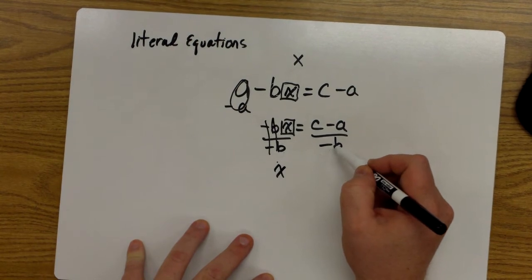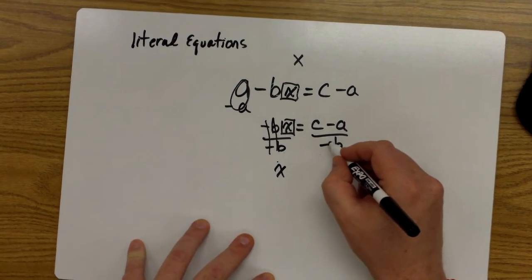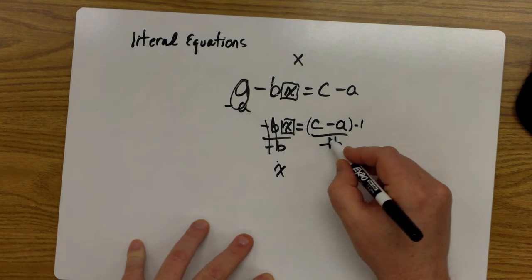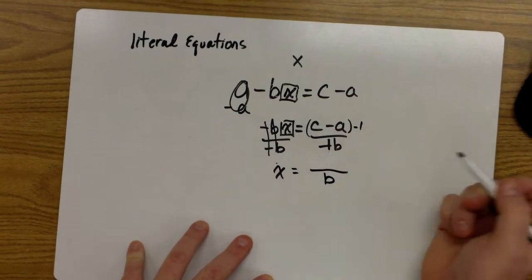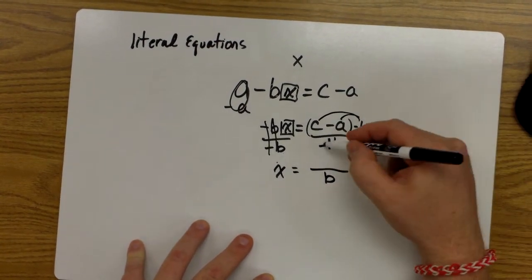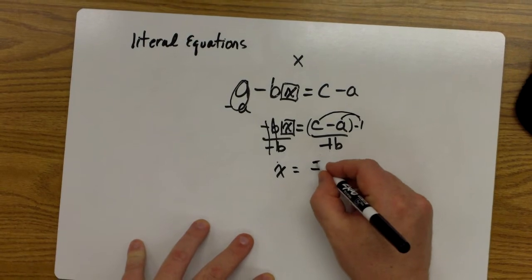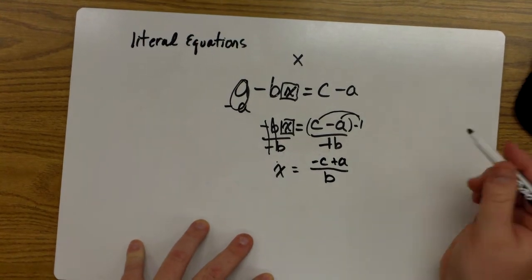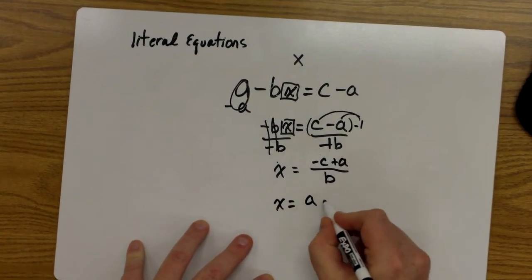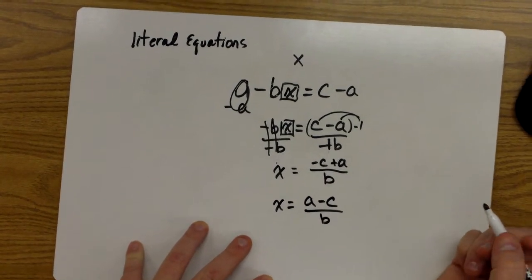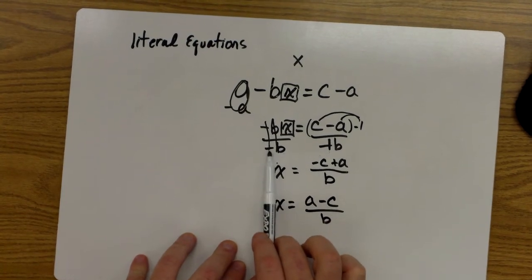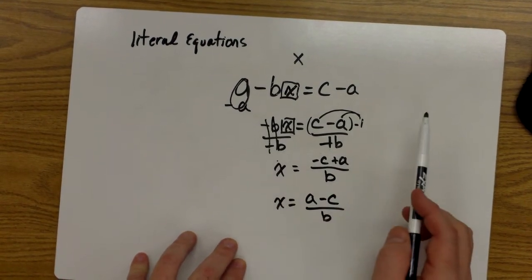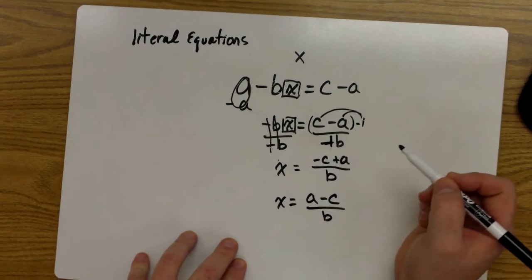This negative B on the bottom is actually like B times negative 1. So if I were to go through and multiply this top one by negative 1, that would change this B on the bottom to a positive B. And then I would distribute my negative inside, because I don't want the negative down in the denominator. And then this top number would become negative C plus A.